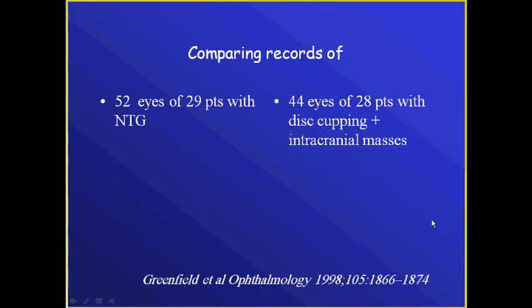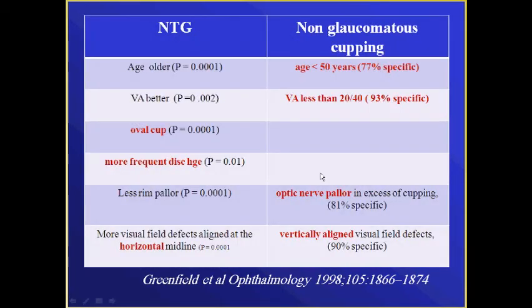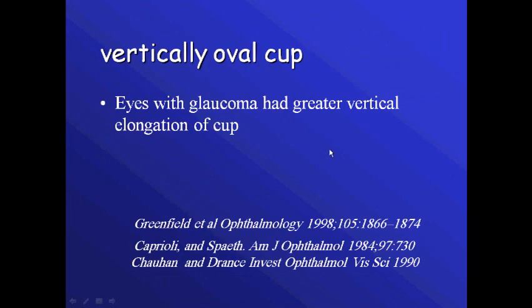In one study, 52 eyes with normal tension glaucoma were compared to 44 eyes with disc cupping and intracranial mass. In normal tension glaucoma the characteristic findings were oval cupping, more frequent disc hemorrhage, and field changes respecting the horizontal meridian. While in non-glaucomatous patients, the features were young age, affection of the central vision, disc pallor, and in the field there was a respect of the vertical meridian.